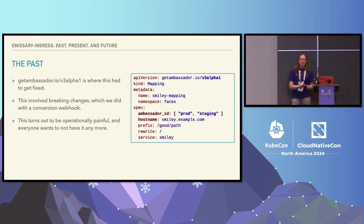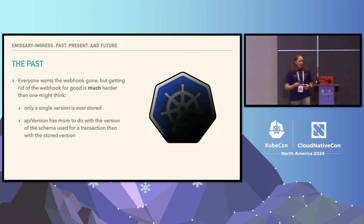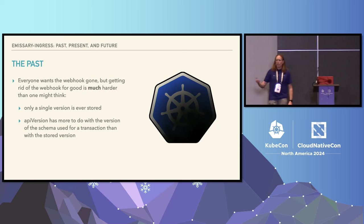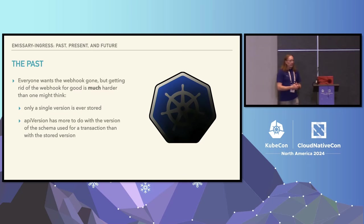The end result for the project is that people, including me, don't like the conversion webhooks and want them to go away. This is hard. The way Kubernetes does versioning is interesting — only a single version of a resource can be stored at a given moment. If you have written something at V2 and then try to read it via the V3 Alpha 1 endpoint, you will get the V2 resource translated back into V3 Alpha 1 by a conversion webhook. If there is no conversion webhook, it pretty much just drops anything where the name is changed, or you get an error if the type changes. It's very tricky.